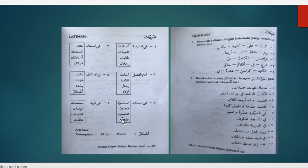Kemudian yang kelima: Fi Masjid Muslimun, Fi Masjid Mu'minun, Fi Masjid Mukhlisun, Fi Masjid Alimun. Ini merupakan Jama' Mudzakkar Salim. Kemudian yang terakhir: Fi Qaryatin Muslimatun, Fi Qaryatin Mu'minatun, Fi Qaryatin Mukhlisatun, Fi Qaryatin Alimatun. Nah ini adalah Jama' Mu'annas Salim.